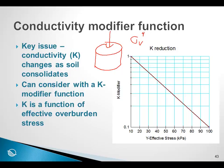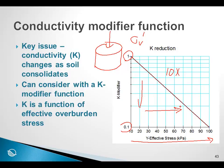The defined conductivity is modified by a function showing one order of magnitude change in the modifier. If the effective stress goes from 10 kPa up to 100 kPa, the conductivity of the soil goes down 10 times — the conductivity becomes less as the vertical effective stress increases. Fundamentally, what is attempted here is to modify the hydraulic conductivity as a function of the effective overburden stress.